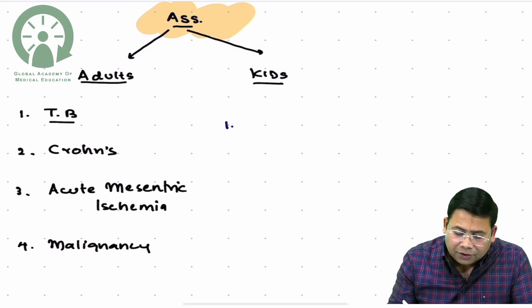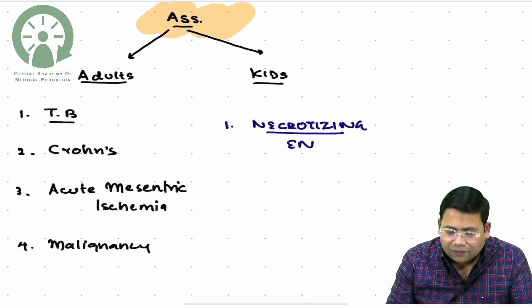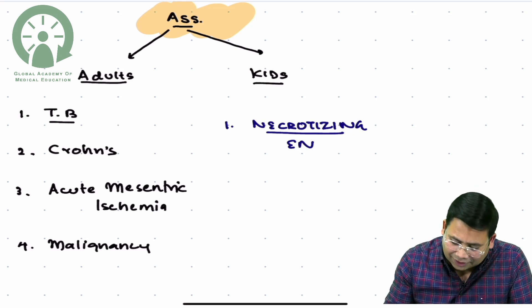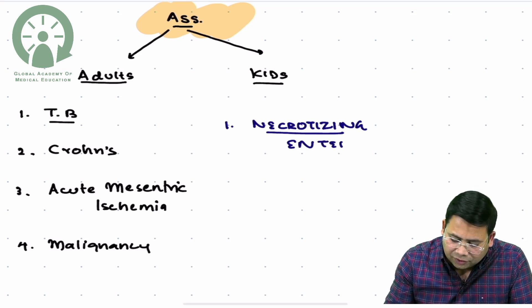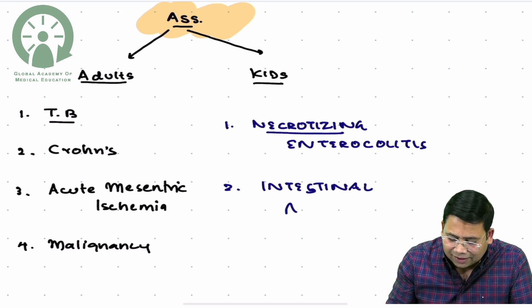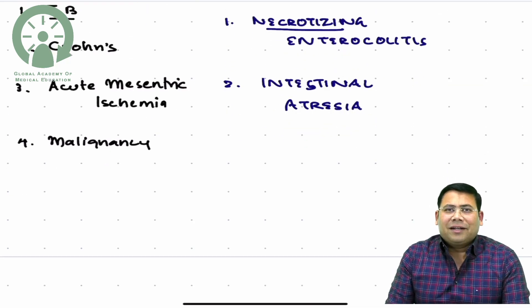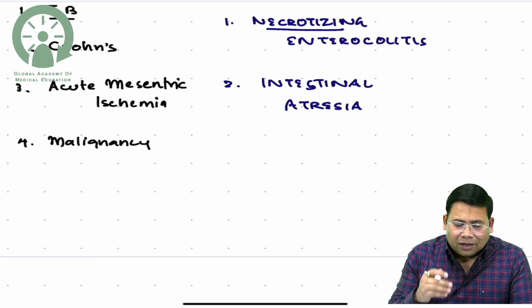When you talk about kids, one very important cause seen in neonates is Necrotizing Enterocolitis (NEC). The second cause is intestinal atresia. Necrotizing enterocolitis and intestinal atresia are very common causes of Short Bowel Syndrome in children.